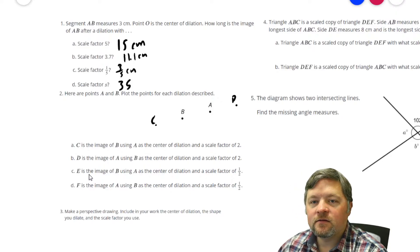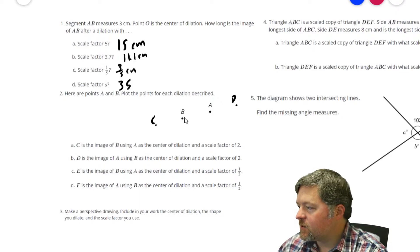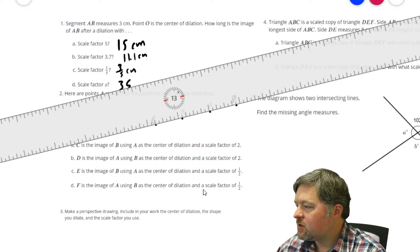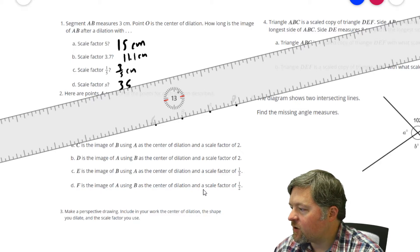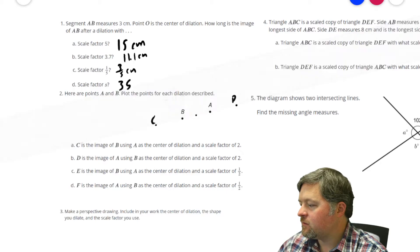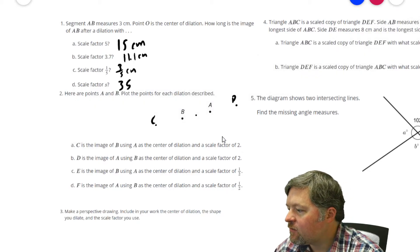E is the image of B using A as the center and a scale factor of one half. So we can do the same thing, but we have to go halfway, and that will be E.